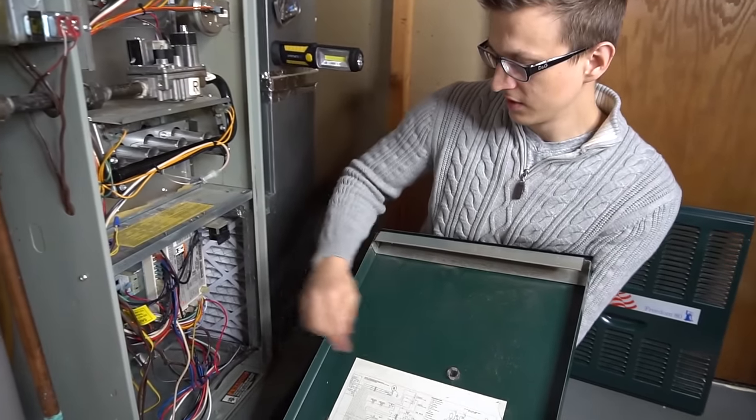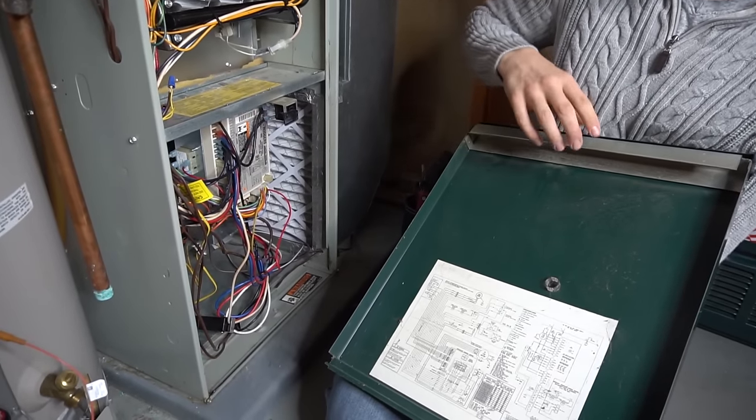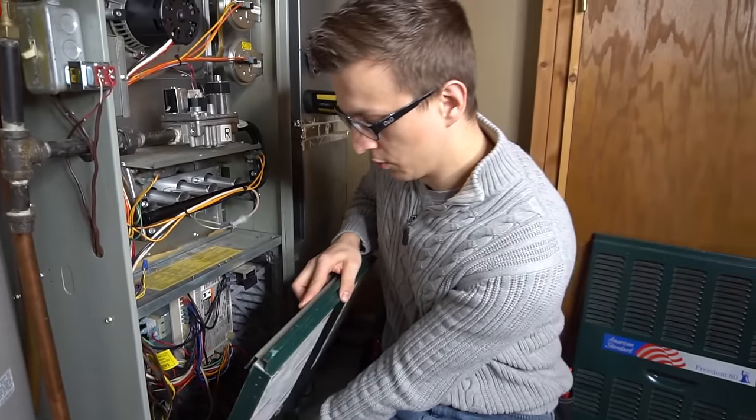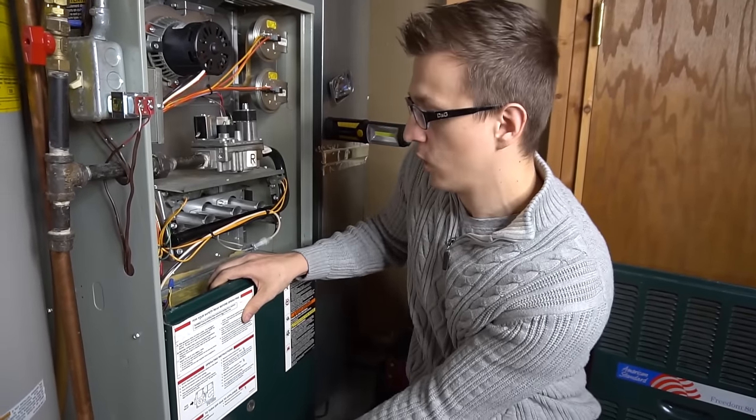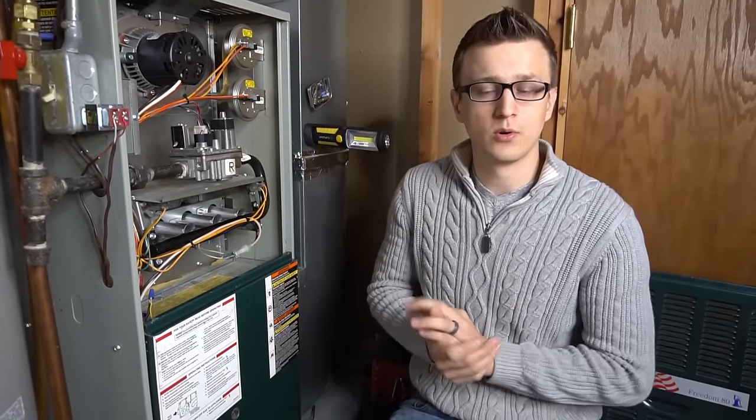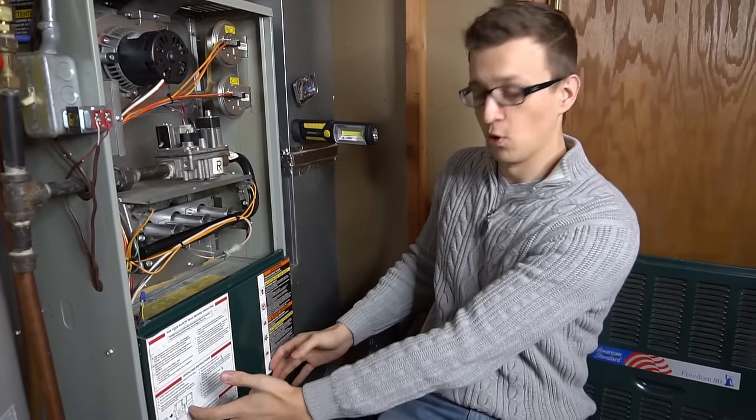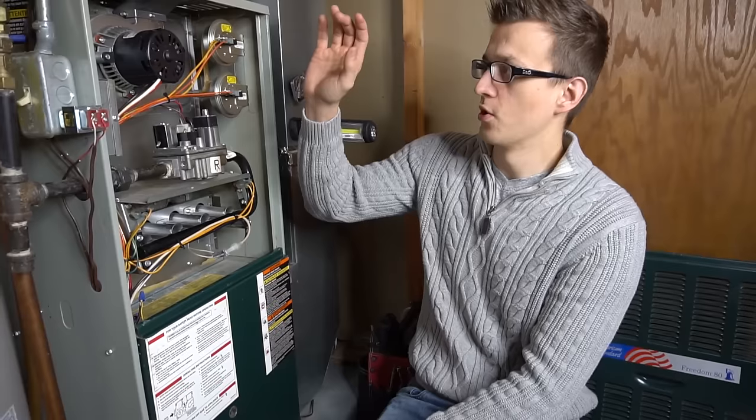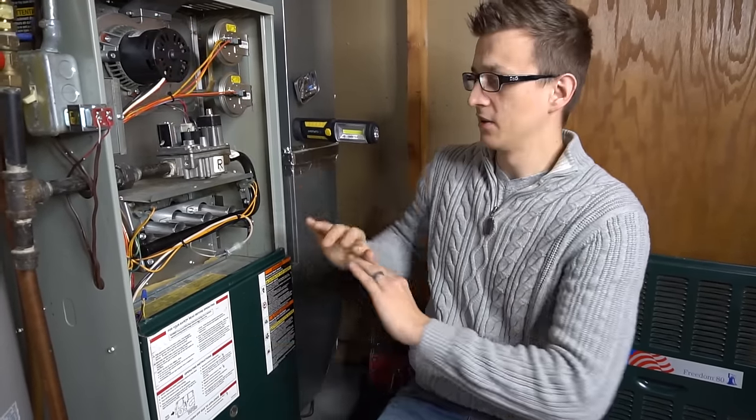You can look at it through the sight glass, or the codes are explained right on the control board itself. Your board will likely be blinking a rollout switch open error code. Typically, your blower motor will be running, your inducer motor will be running, or maybe just the blower motor alone and nothing else is happening.